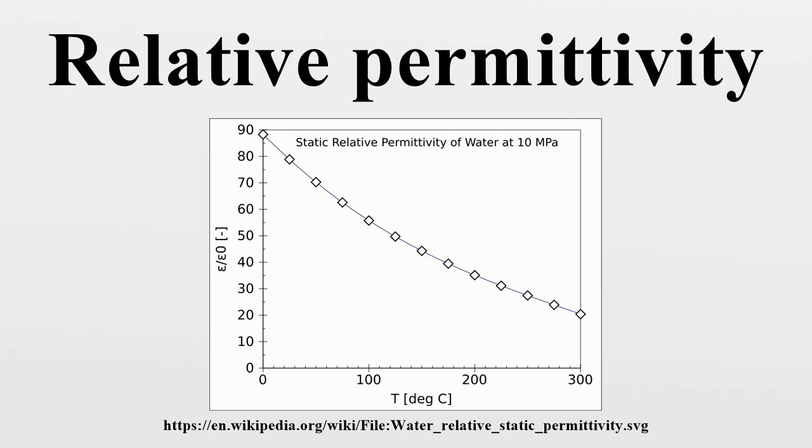In an isotropic media the relative permittivity is a second-ranked tensor. The relative permittivity of a material for a frequency of zero is known as its static relative permittivity.